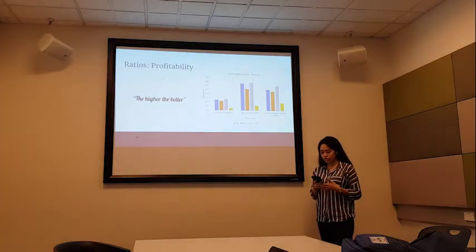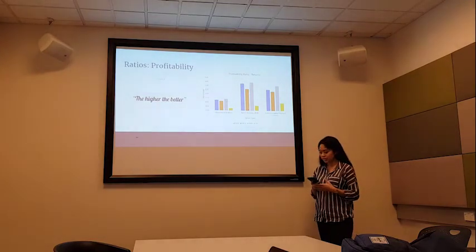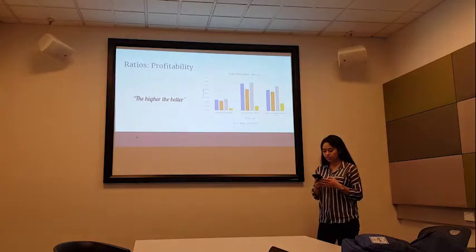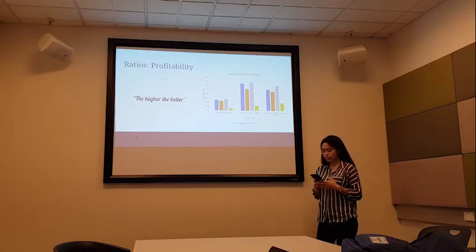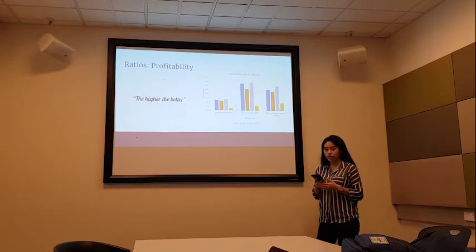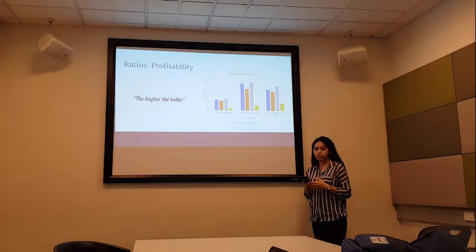When looking at profitability ratios, the higher the better. So seeing drops in return is very concerning for investors and current stakeholders of the business. When looking at the return on assets and return on equity, again we see an initial increase for the year 2016, but then a massive decrease in the year 2017. Looking specifically at return on assets, we can see how effective a company is at deploying assets to generate sales and achieve profits. Seeing this drop is not good for any party involved in the company.